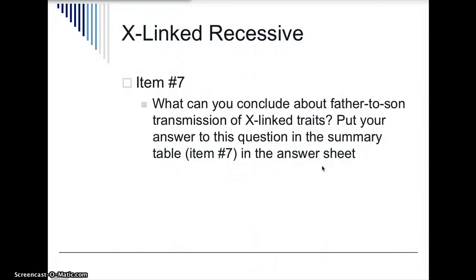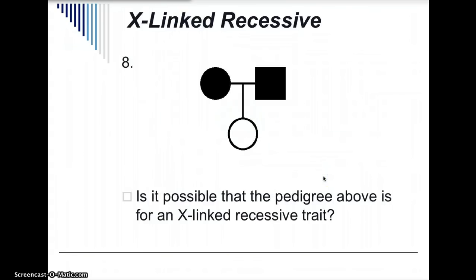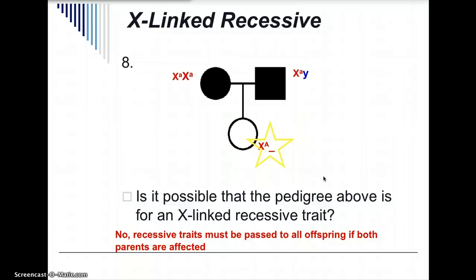There is no father-to-son transmission of X-linked traits at all — they come from the mother's side of the family, perhaps from the grandfather. Is it possible that this is an X-linked recessive trait? The mom has two recessive alleles and the dad has a recessive allele on his X and a Y chromosome. The daughter would have to get a dominant allele from somewhere, but she doesn't have one. She would have to get a dominant allele from her mom or dad, and neither of them have one to pass on. So this is not X-linked recessive.